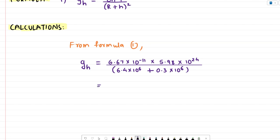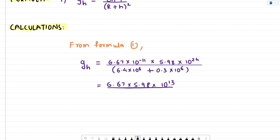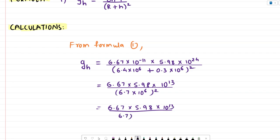We add the two terms in the denominator: 6.4 plus 0.3 gives 6.7, into 10 raised to 6, the whole squared. For the numerator, 10 raised to minus 11 into 10 raised to 24 gives 10 raised to 13. The denominator becomes 6.7 squared into 10 raised to 12, since 10 raised to 6 squared is 10 raised to 12.